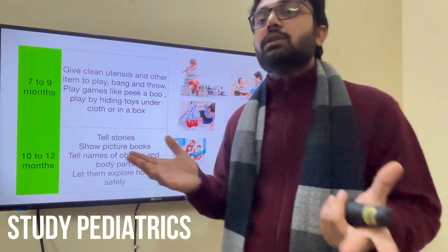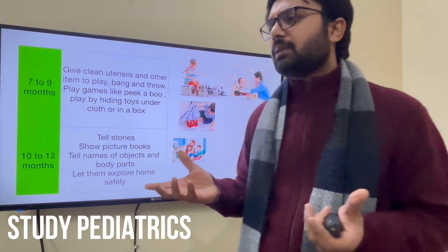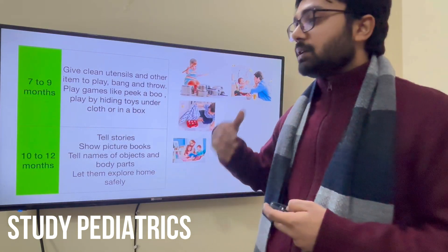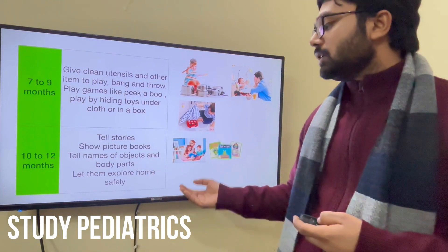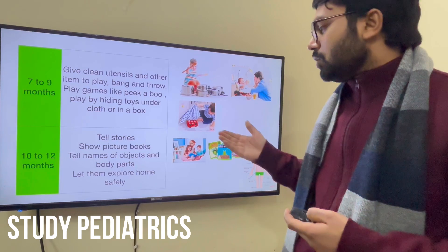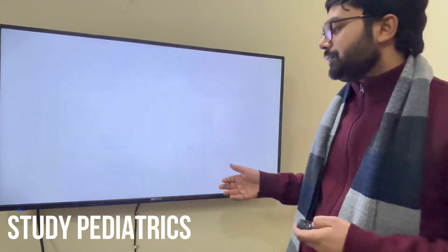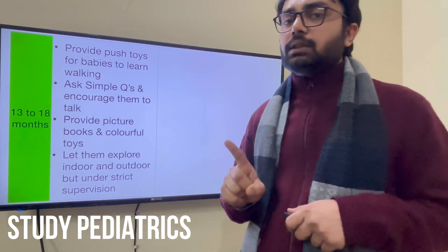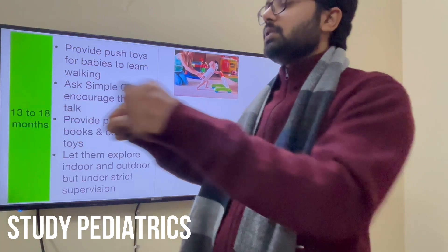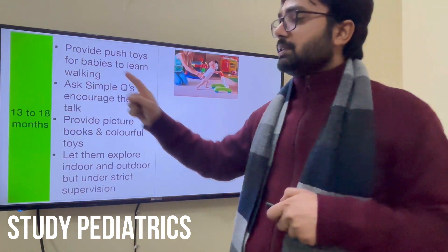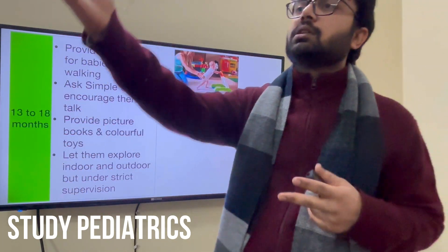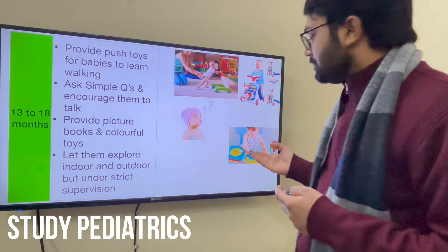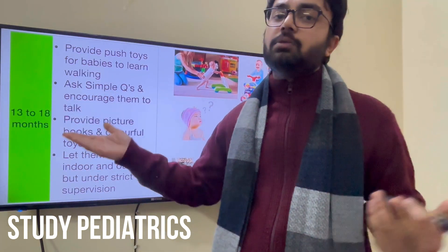For 10 to 12 months, tell stories to the child — he will listen to a certain extent and bonding will be created. Show picture books as different colors improve development. Tell the names of objects and body parts. Let the child explore the home under supervision. For 13 to 18 months, provide push toys — not walkers, but toys the child pushes so that he can walk. Ask simple questions like 'Who is this?' and point to objects to encourage him. Provide picture books and let them explore indoors as well as outdoors, as by 13 to 18 months the child can run and walk alone.